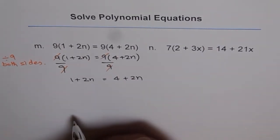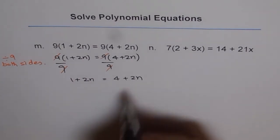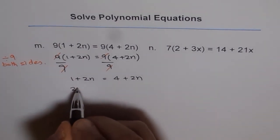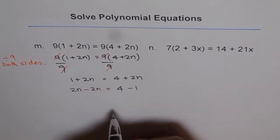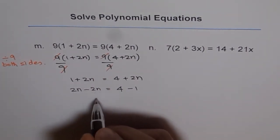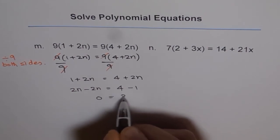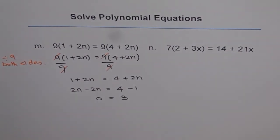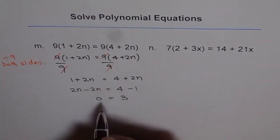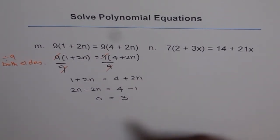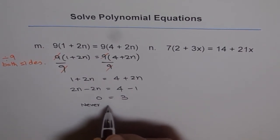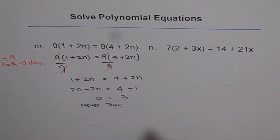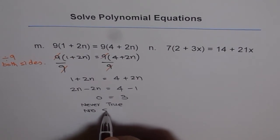Now let's bring the variables to one side and the constants to the other. So we have 2n minus 2n and 4 minus 1. So 2n minus 2n is 0 and 4 minus 1 is 3. Now 0 equals to 3. That is never true. Can 0 be 3? No, it can't be. Therefore we have no solution. Such equations don't have any solution.